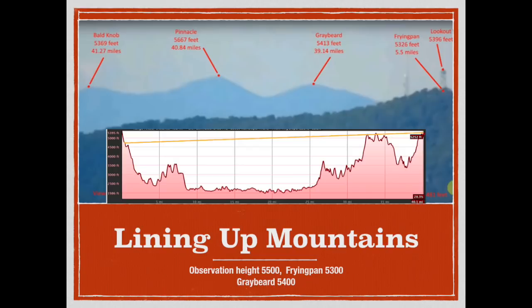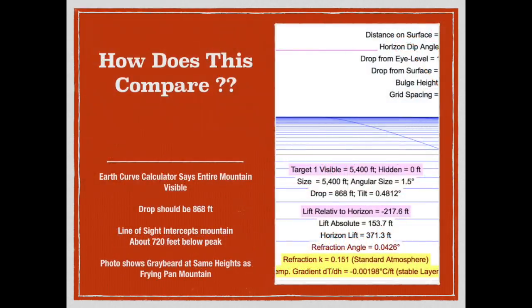Our next step is to go to the curve of the Earth calculator and see how this compares to a curved Earth. The mountain will be fully visible from this elevation, and the drop is 880 feet. We are using standard refraction with this, not adding in any other figures, just to get basically a ballpark figure. But that is enough to show that this photograph is consistent with a curved Earth and is incompatible with a flat Earth.